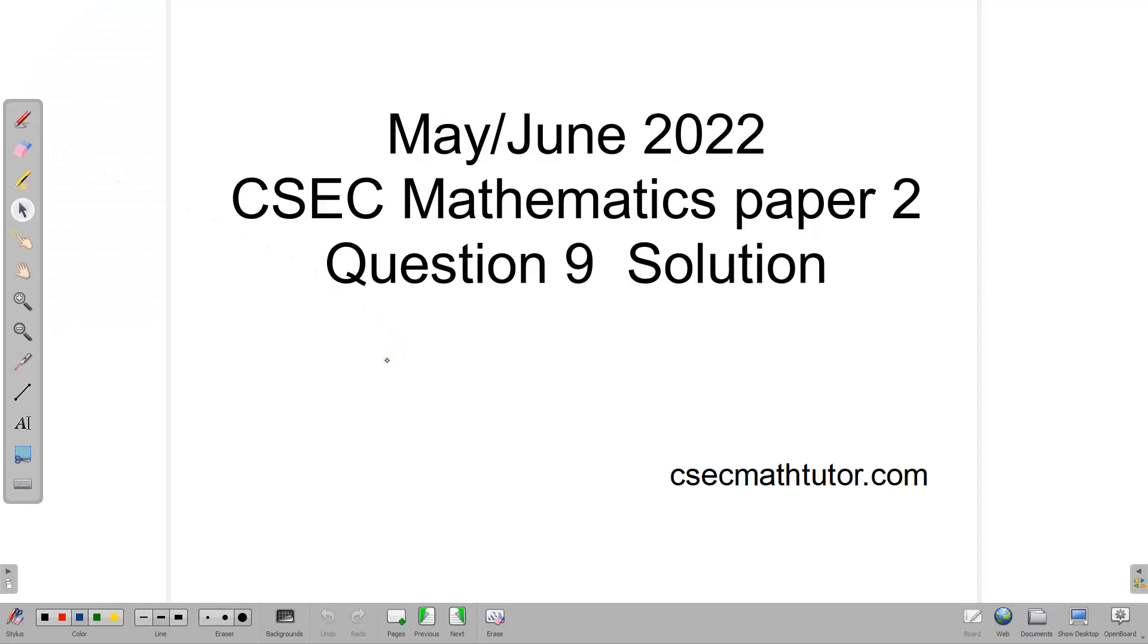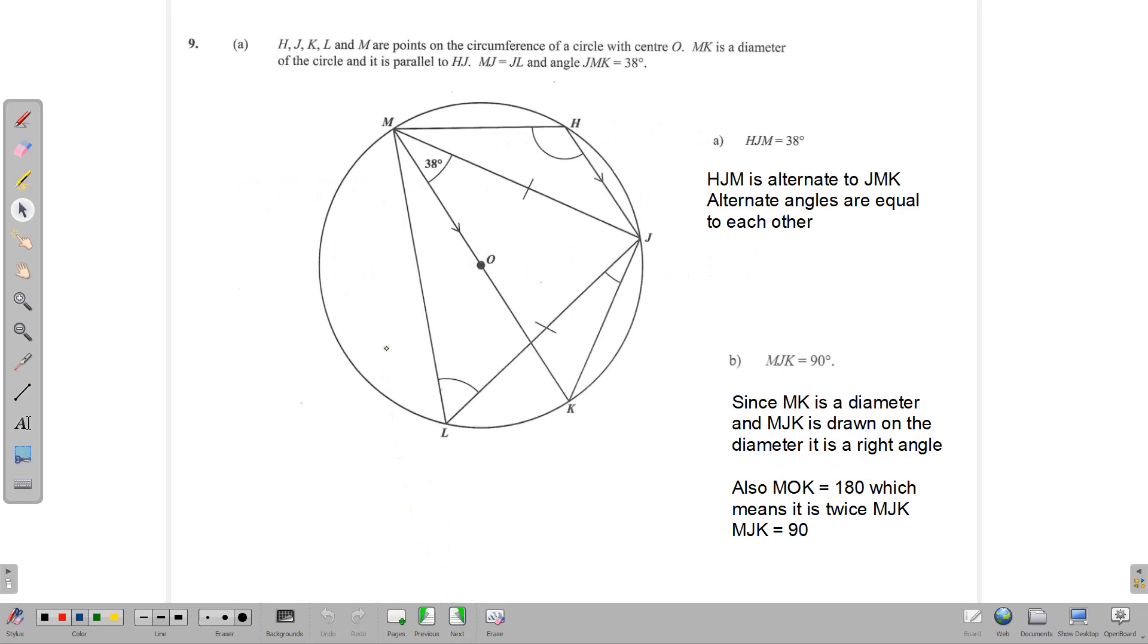Hello and welcome back. In this video, we'll be looking at the solution to question 9 of the May-June 2022 CSEC Mathematics Paper 2. The first part of the question is a circle theorem question. We have H, J, K, L, and M are points on the circumference of a circle with center O.